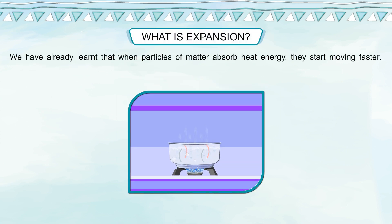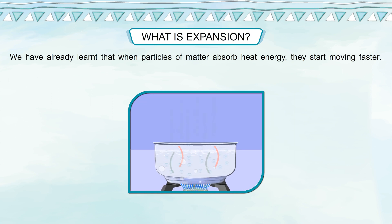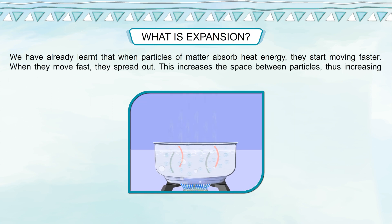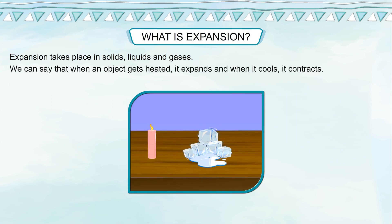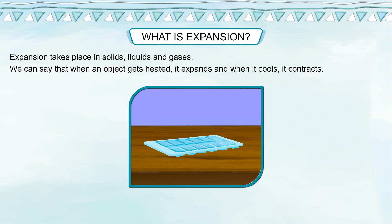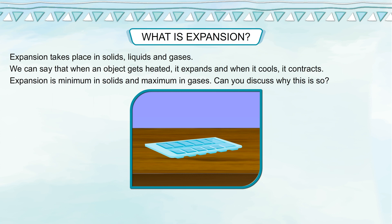What is expansion? When particles of matter absorb heat energy, they start moving faster. When they move fast, they spread out — this increases the space between particles, thus increasing their volume. This is called expansion. Expansion takes place in solids, liquids, and gases. When an object gets heated, it expands, and when it cools, it contracts. Expansion is minimum in solids and maximum in gases.